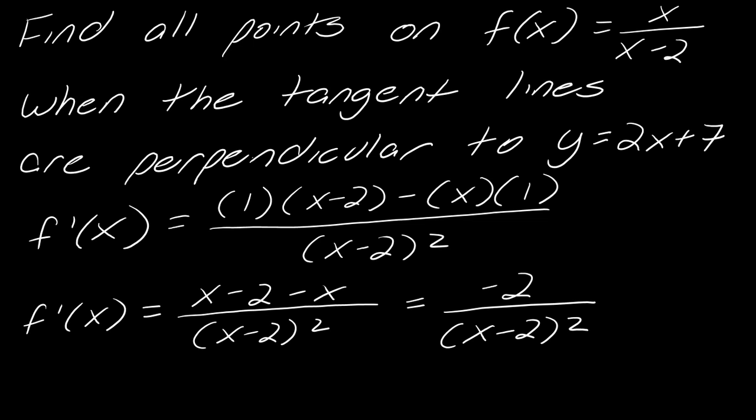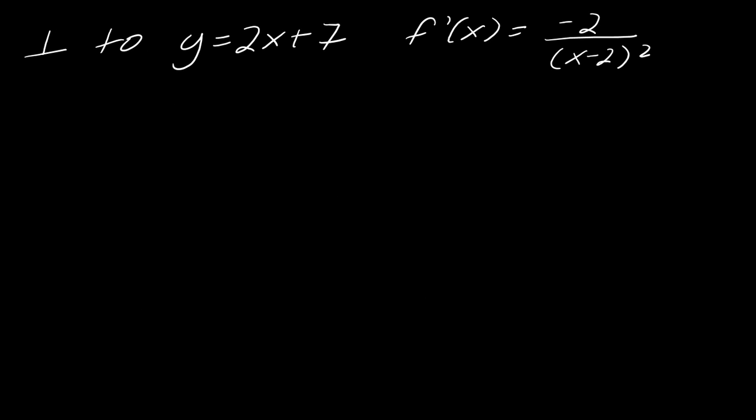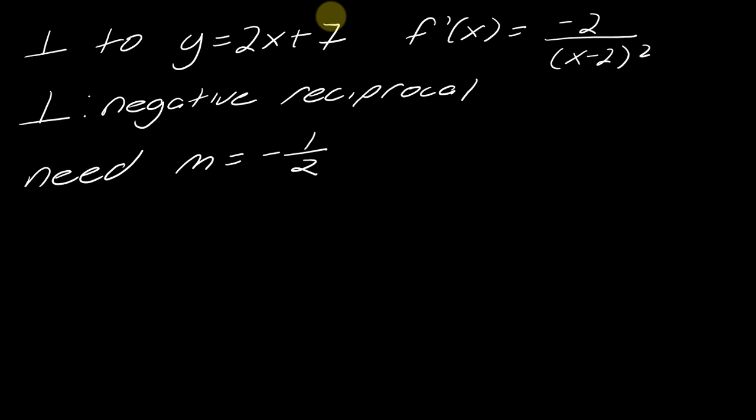So now I've got to think about this other information: perpendicular to y equals 2x plus 7. So let's think about what it means to be perpendicular. To be perpendicular, you have to be the negative or opposite reciprocal. So if I want a tangent line that's perpendicular to this, the slope of this would be 2. So the slope that we need would be negative 1 half.